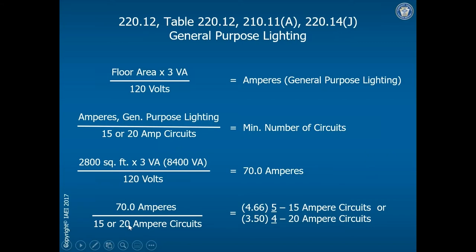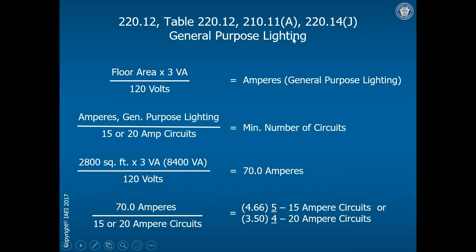That means at a very minimum, this 2,800 square foot house would need five 15-amp general lighting circuits. If using 12-gauge with 20-amp circuits, 20 goes into 70 three and a half times, so we'd need at least four 20-amp general lighting circuits. Importantly, per section 220.5, you cannot drop the decimal here — if the result is 4.16, you still round up and need a minimum of five 15-amp general lighting circuits to satisfy the general lighting load for this dwelling unit.